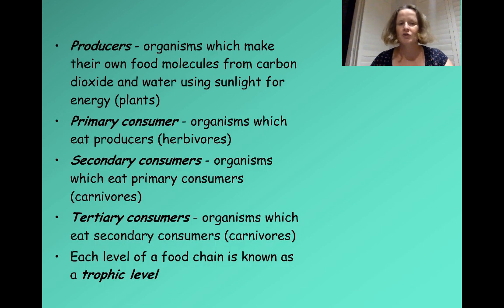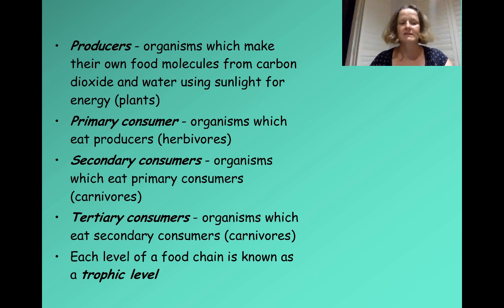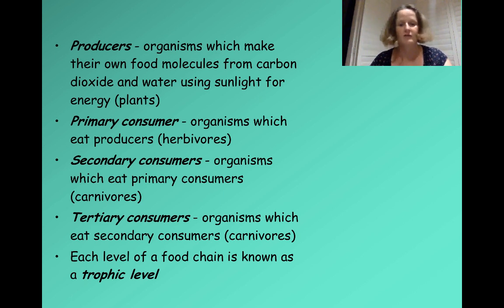Here are some definitions. Producers are the organisms which make their own food molecules from carbon dioxide and water using sunlight for energy — producers are plants. Primary consumers are the organisms that eat the producers; they're always herbivores. Secondary consumers eat the primary consumers, so they are carnivores. Tertiary consumers eat secondary consumers; they are also carnivores. Each level of the food chain is a trophic level.